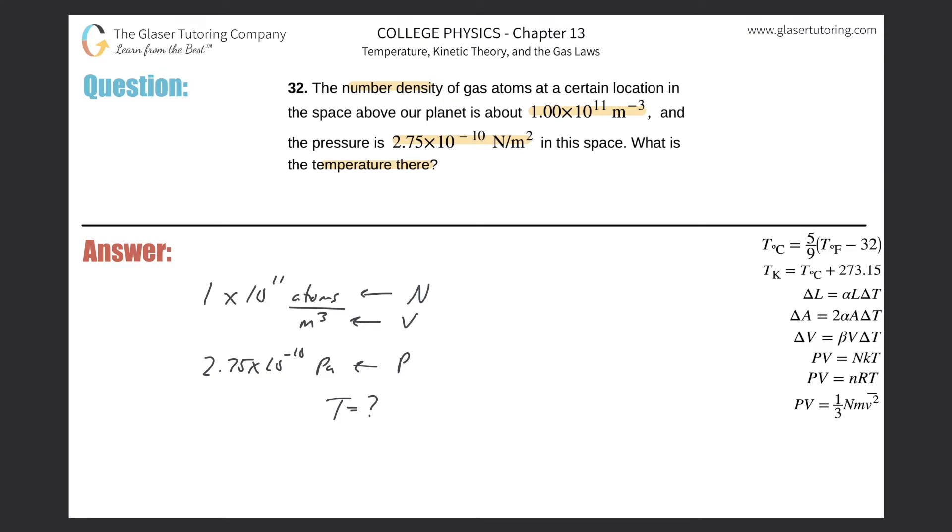And we notice that this particular form of the ideal gas law fits the bill. So we have PV equals capital N times the Boltzmann constant times the temperature. Now if I solve this for T, what do I have to do? I have to divide out the N and K.